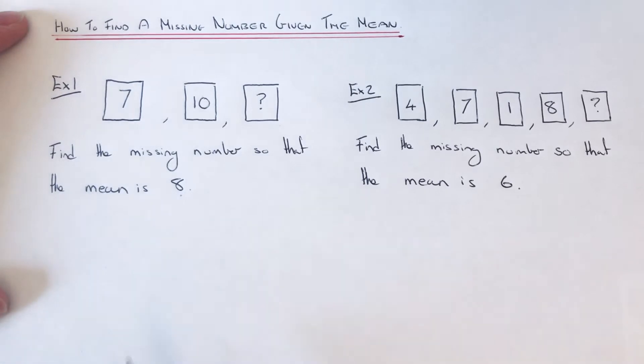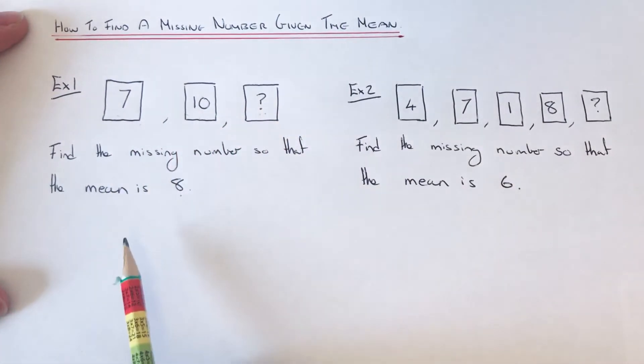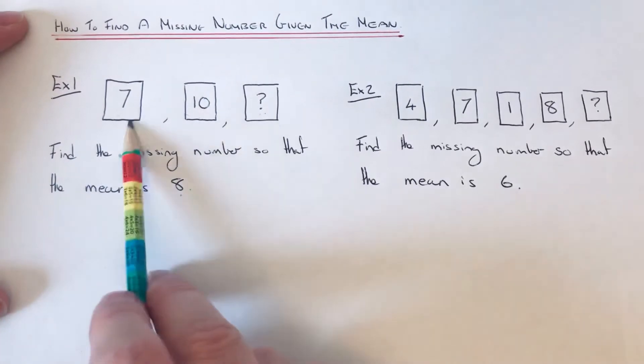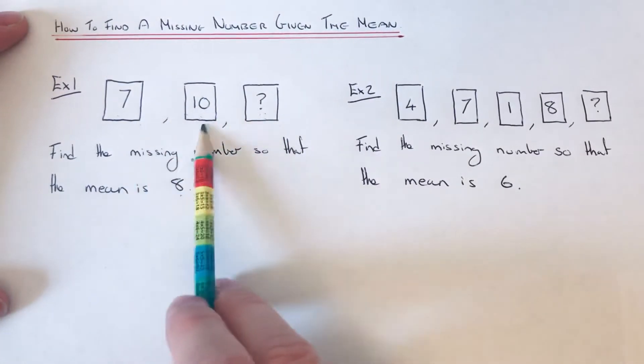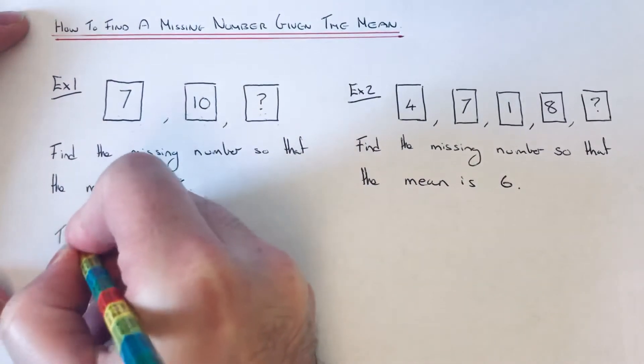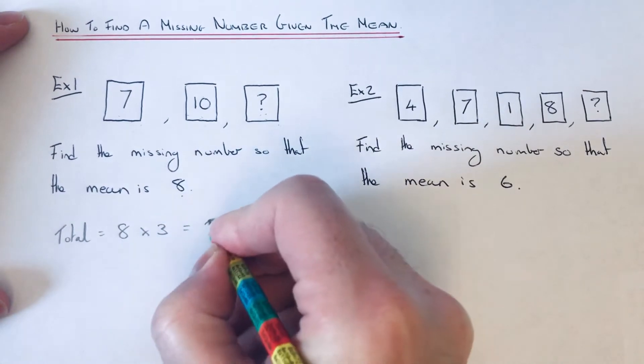The first thing we need to do is work out what the total of these three numbers are. We can find the total by multiplying the mean by how many numbers we've got. So we've got three numbers here. To get our total we do 8 times 3 which is 24.